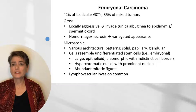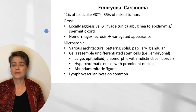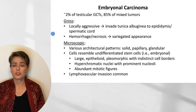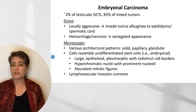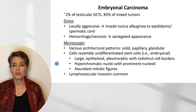Embryonal carcinoma accounts for about 2% of testicular germ cell tumors and is frequently involved in mixed tumors. Unlike seminoma, which is quite indolent, embryonal carcinoma is locally aggressive and can invade the tunica albuginea to the epididymis and spermatic cord. There is a variegated appearance due to abundant hemorrhage and necrosis. There are a variety of architectural patterns — solid, papillary, and glandular — which do not correspond with biologic behavior. The cells are considered to resemble undifferentiated stem cells and are large and epithelioid, pleomorphic with indistinct cell borders, hyperchromatic nuclei with prominent nucleoli, and abundant mitotic figures.